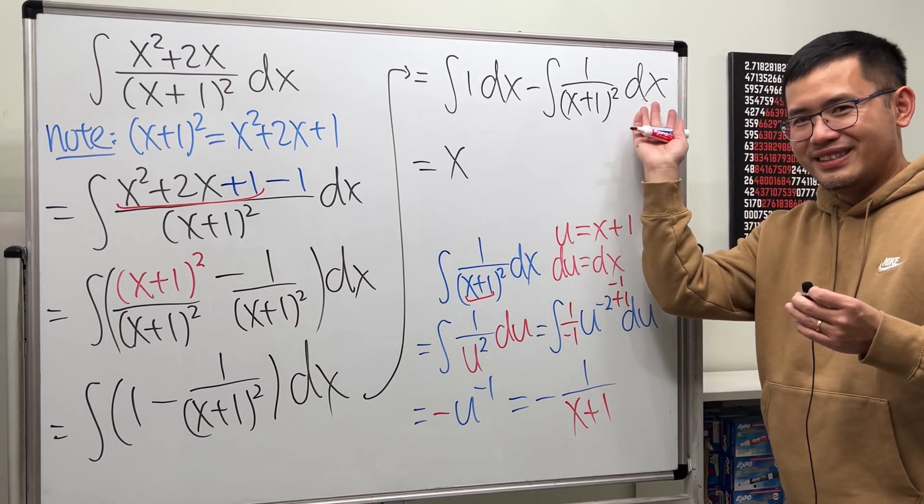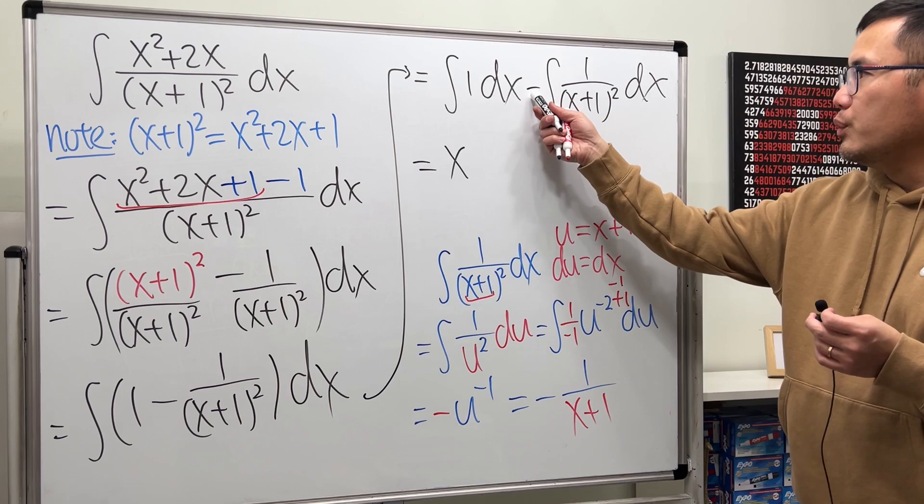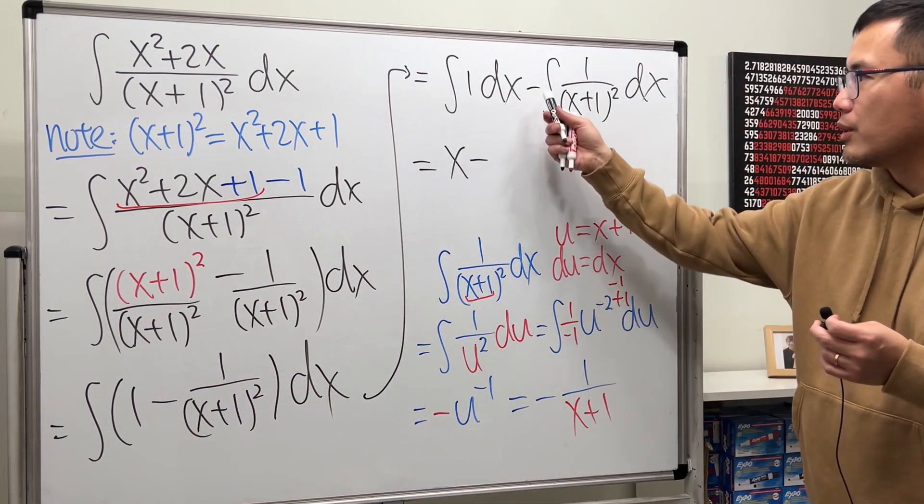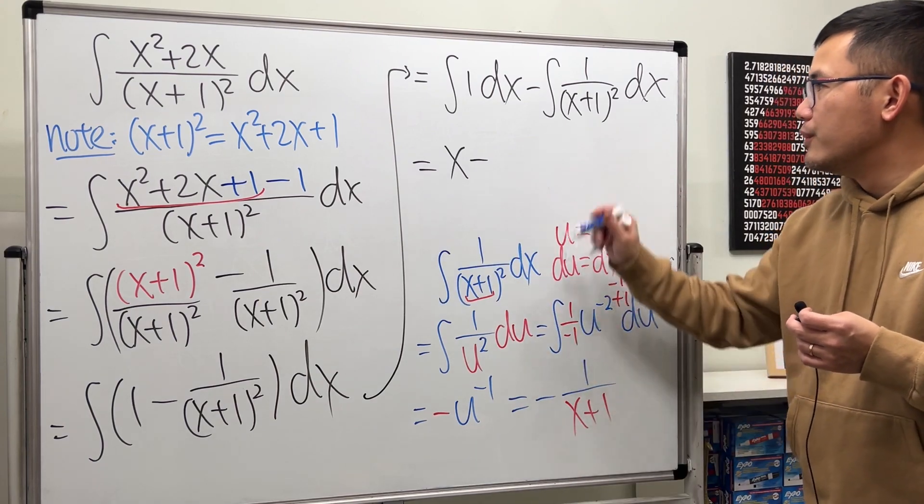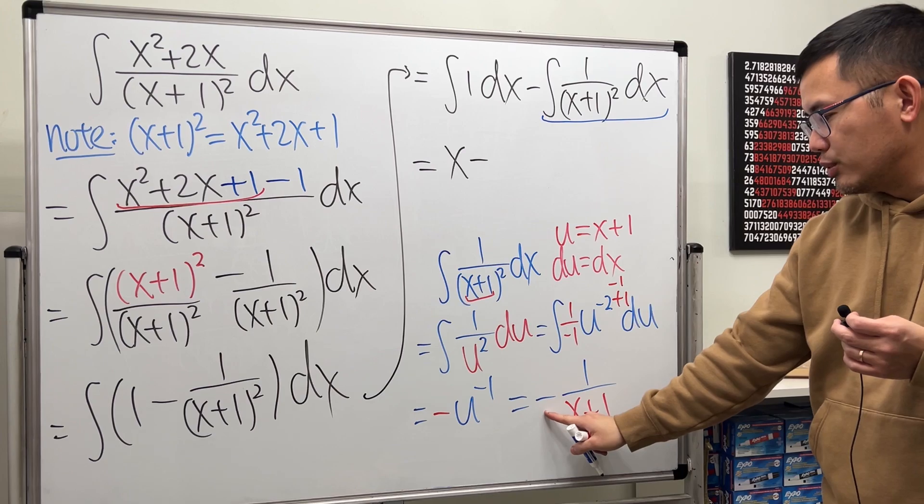So just put down the plus c for this result. So ladies and gentlemen, here we have the minus from this subtraction here. So bring that down. And then for this integral, it has a negative result.